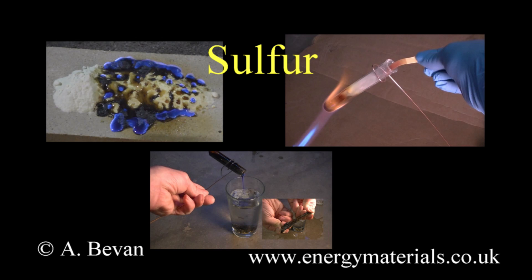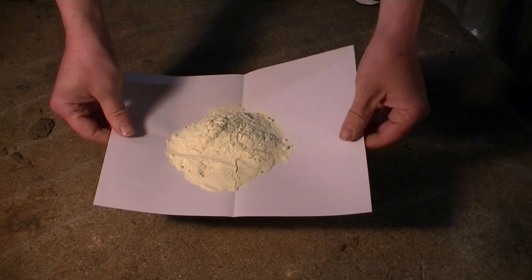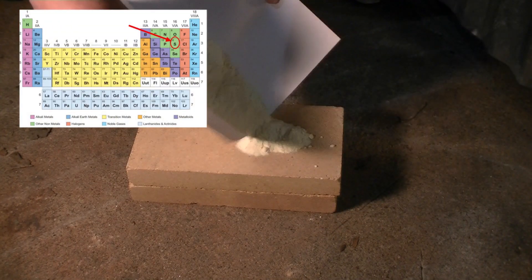This is a short demonstration video looking at some of the characteristics of elemental sulfur. Sulfur is a non-metal and the 16th element found in the periodic table.